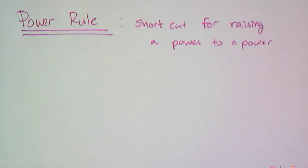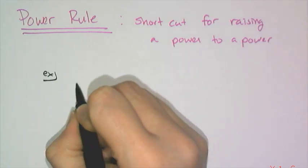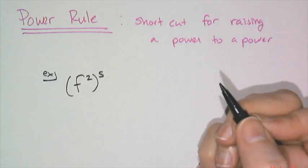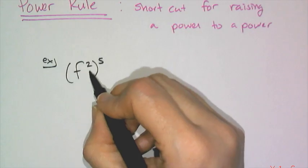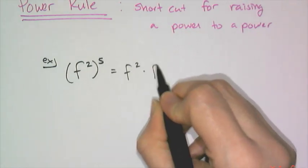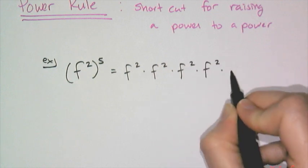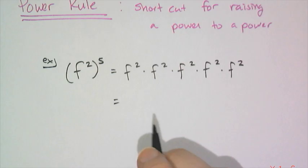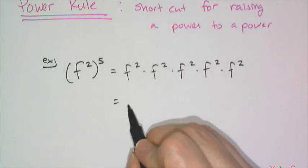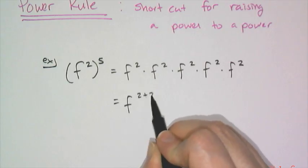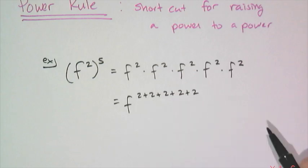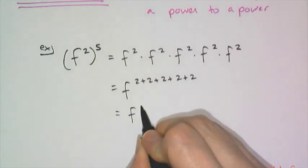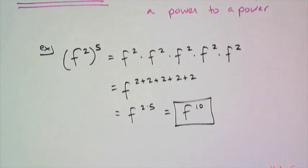Now let's explore the power rule, which is the shortcut for raising a power to a power — taking an exponential expression and raising it to an exponent. By definition, f squared raised to the fifth power is f squared times f squared times f squared times f squared times f squared. Or I have five groups of twos, and using the product rule, that's f to the 2 plus 2 plus 2 plus 2 plus 2, and repeated addition is multiplication, so that's f to the 2 times 5, or f to the tenth power.